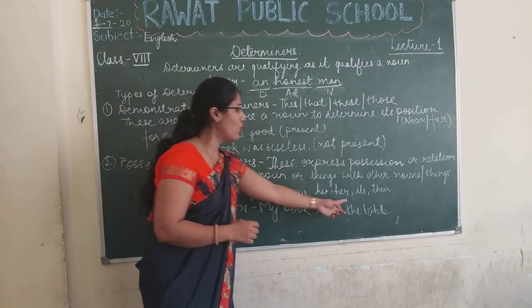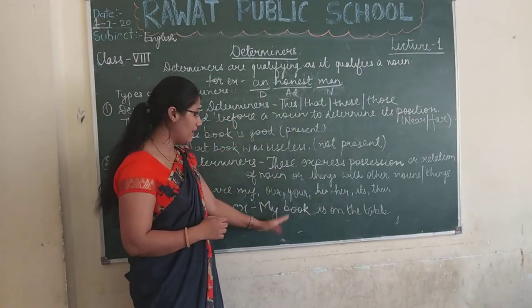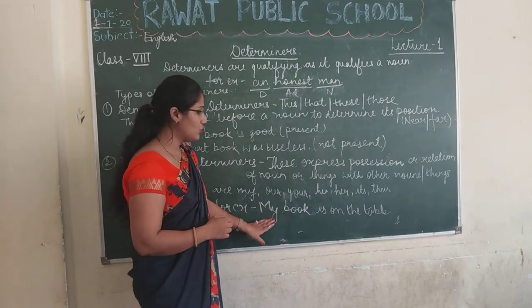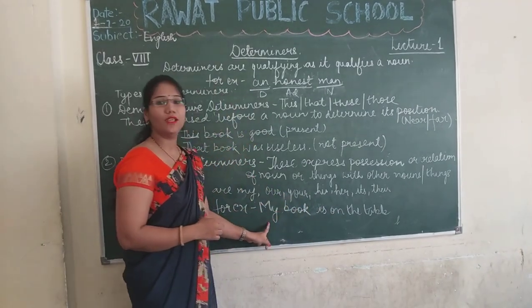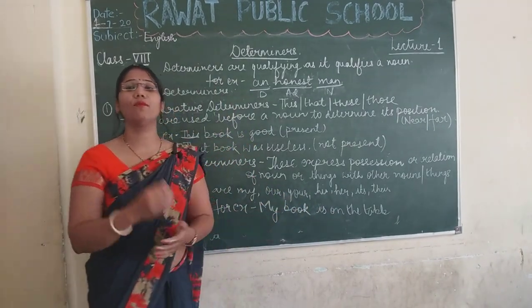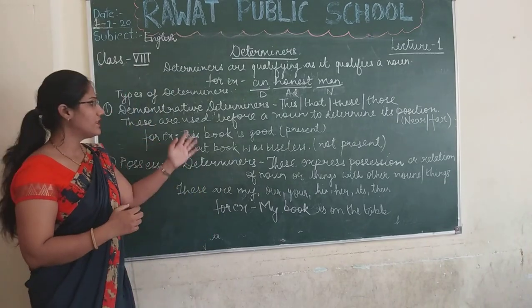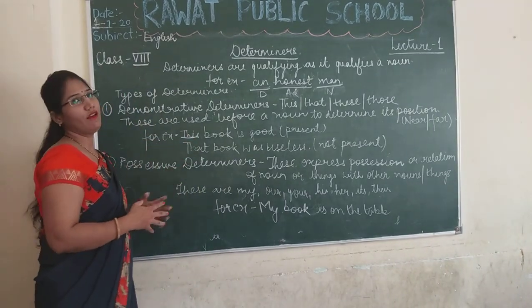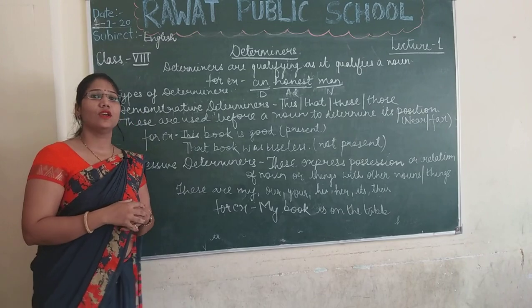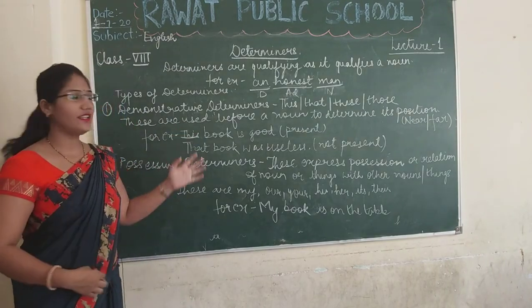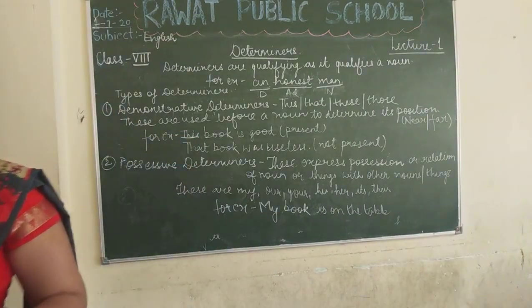For example, 'My book is on the table' — kiski book table pe hai? Mine. It's showing the book's relation with me — kiski book hai? Meri book hai. So this is all for today. We will discuss the later types in our next class. You have to write these in your copies. Thank you.